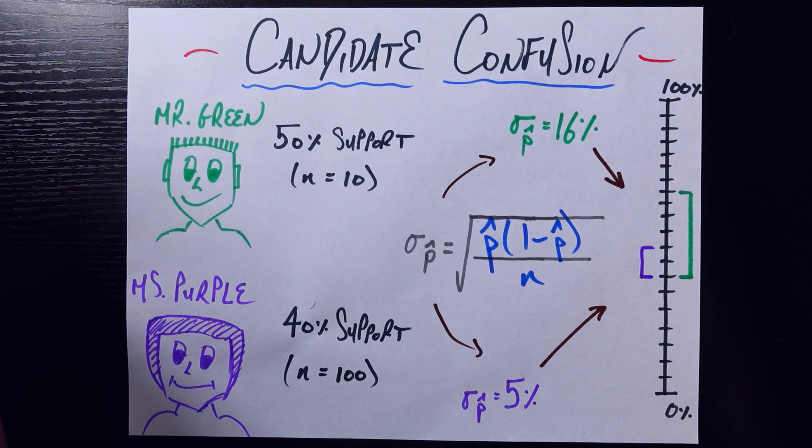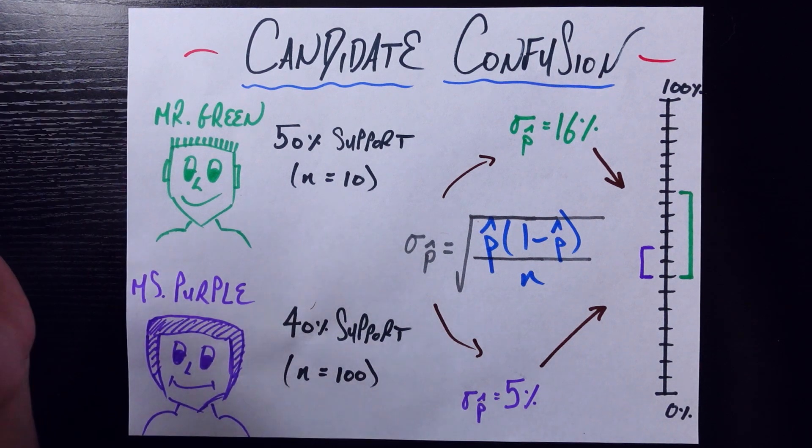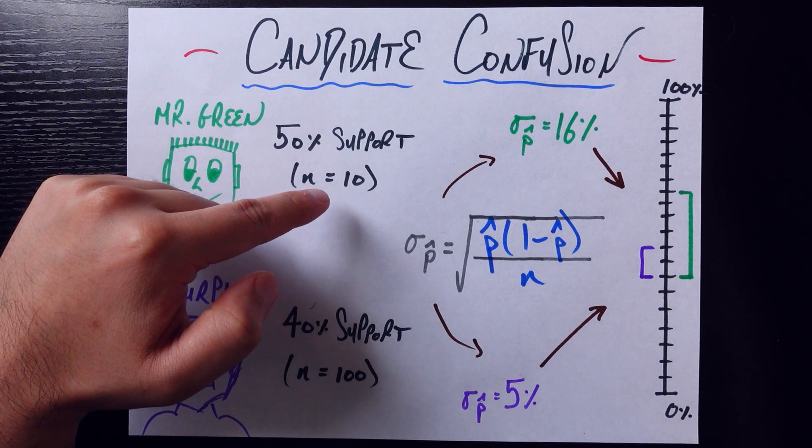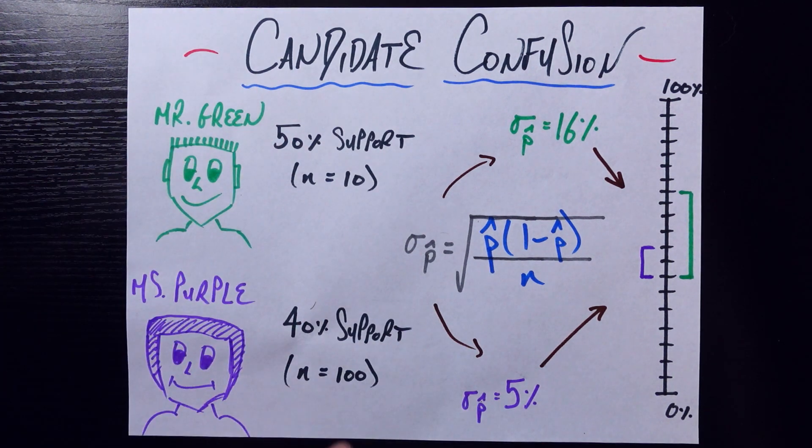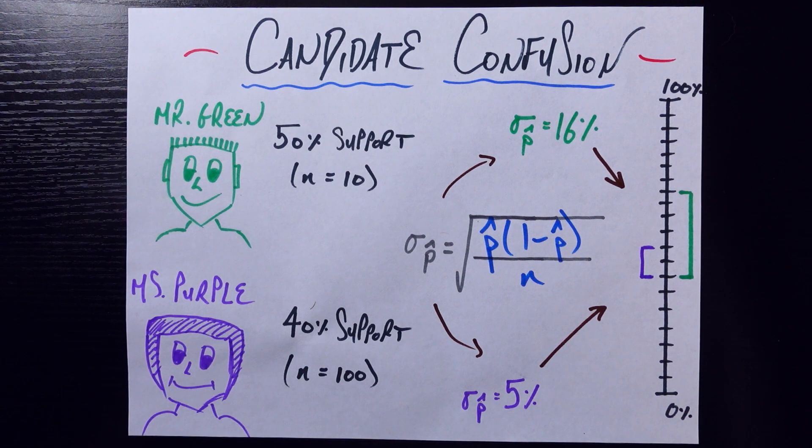But not so fast. Let's look at these n equals numbers that often show up on polls, but people don't really pay attention to them. It turns out only 10 people were surveyed in order to get this statistic for Mr. Green. But 100 people, which is 10 times more, were surveyed to get the statistic about Ms. Purple, and that should matter.